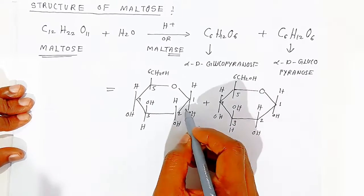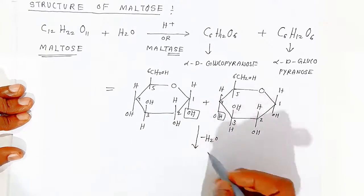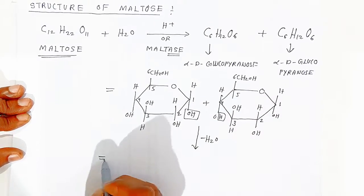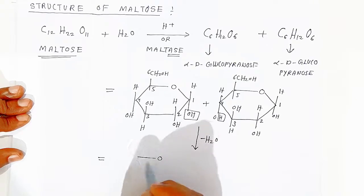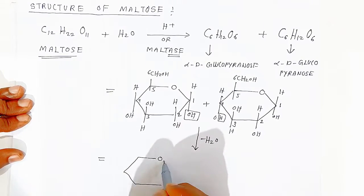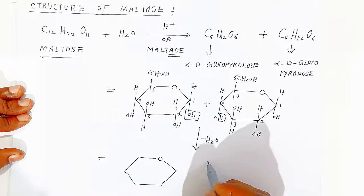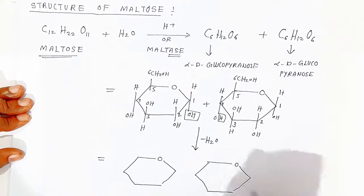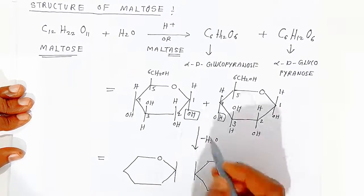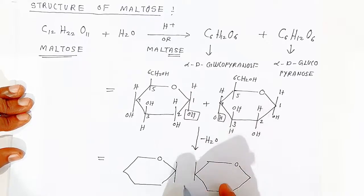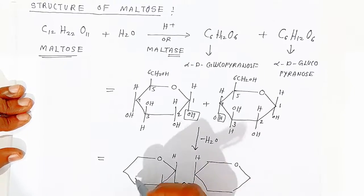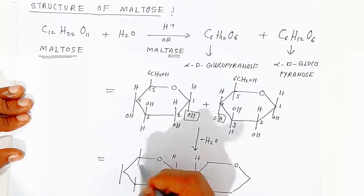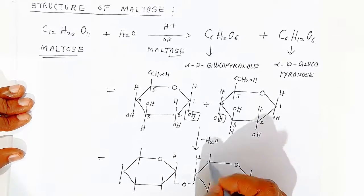Both monosaccharide units condense by eliminating a water molecule, forming a glycosidic linkage represented by an oxygen bridge between the two pyranose rings. Draw the two pyranose rings connected, with oxygen as the glycosidic linkage and all tetravalencies filled.